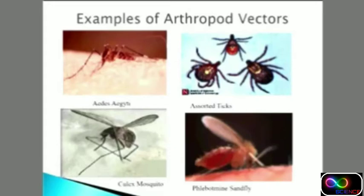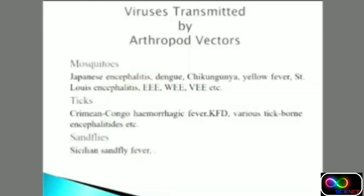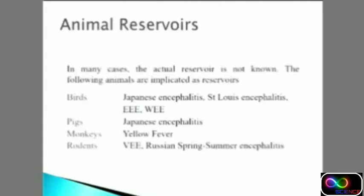Examples of arthropod vectors include mosquitoes — of which Aedes aegypti is responsible for Dengue — Culex mosquito, assorted ticks, and sandfly. Viruses transmitted by mosquitoes include Japanese Encephalitis, Dengue, Chikungunya, and Yellow Fever. Ticks transmit Crimean-Congo Hemorrhagic Fever and Tick-borne Encephalitis. Sandfly transmits Sandfly fever. Animal reservoirs include: birds and pigs for Japanese Encephalitis, monkeys for Yellow Fever, and rodents for Venezuelan Equine Encephalitis.